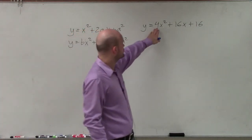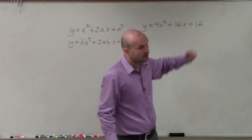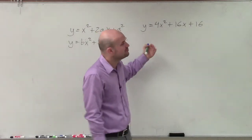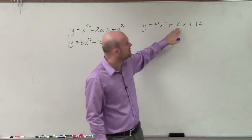So again, what we need to do is take the square root of, I'm sorry, 4 and 16, and make sure 2 times those two numbers multiplied is going to equal 16.